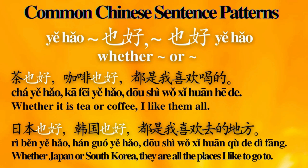Number 4: 也好...也好 — 'Whether...or.' Sentence examples: 茶也好，咖啡也好，都是我喜欢喝的。 Whether it is tea or coffee, I like them all.